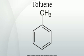Toluene may also be brominated by treating it with HBr and H2O2 in the presence of light. Catalytic hydrogenation of toluene to methylcyclohexane requires a high pressure of hydrogen to go to completion, because of the stability of the aromatic system. The pKa is approximately 45.